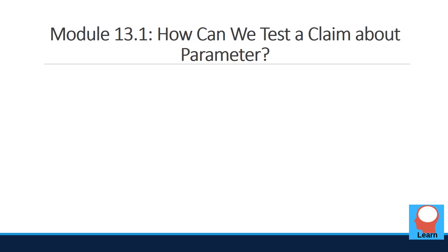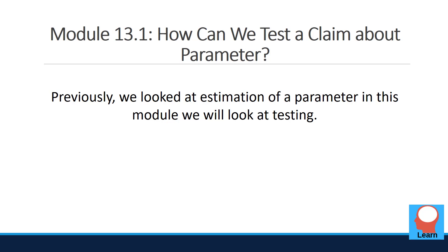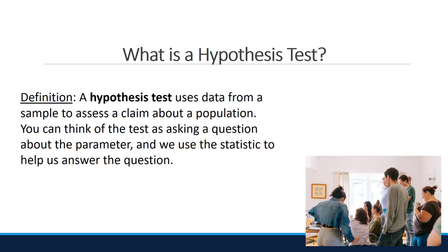Module 13.1: How can we test a claim about a parameter? Previously, we looked at estimation of a parameter. In this module, we will look at testing. A hypothesis test uses data from a sample to assess a claim about a population. You can think of the test as asking a question about the parameter, and we use the statistic to help us answer the question.